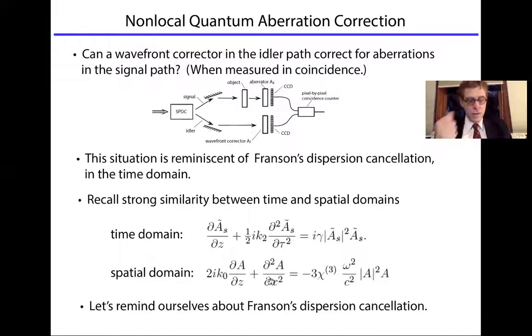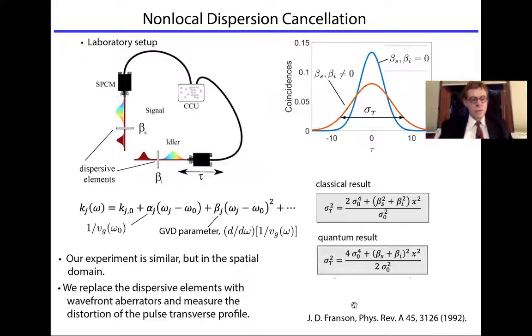So this analogy is so strong. Let's remind ourselves how, for instance, dispersion cancellation works. Here would be the conceptual laboratory setup. We have a laser that produces pulses. We split them into two. One pulse enters this optical fiber, passes through a dispersive material. This beta is the magnitude of the dispersion of this material. The pulse gets spread out, falls onto a photodetector.